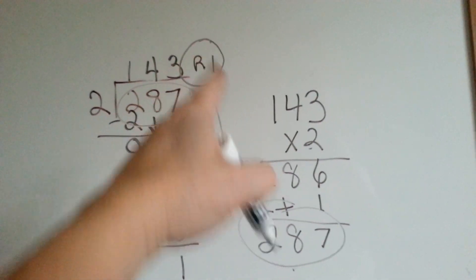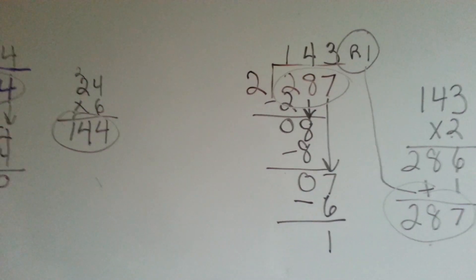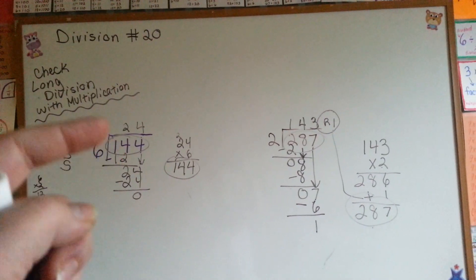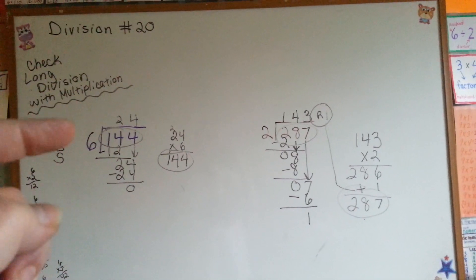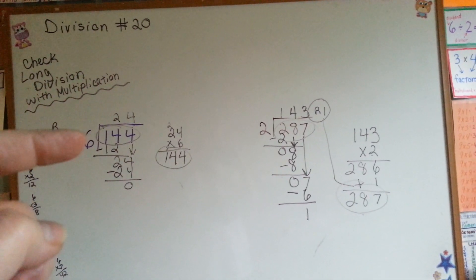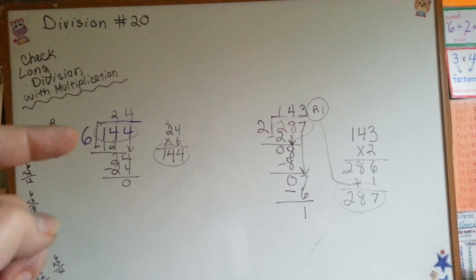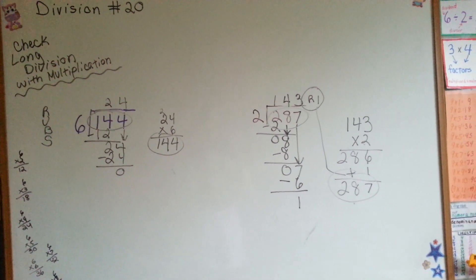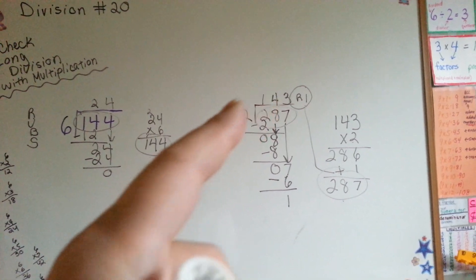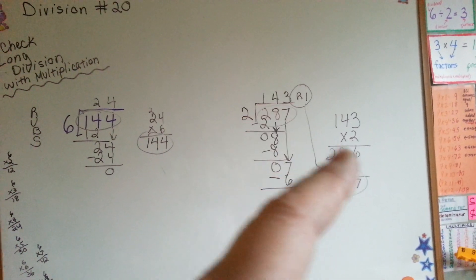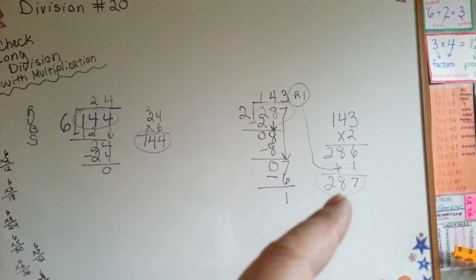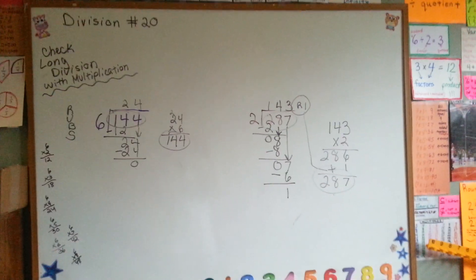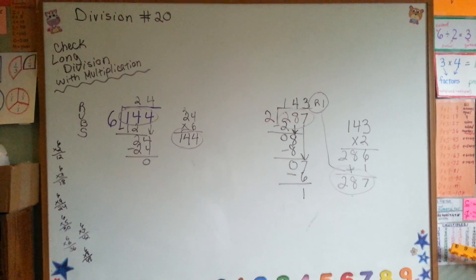That means 143 remainder 1 is correct. So that's how you do long division and check it with multiplication. You do your long division. You write your answer up on top. Then to check it, you multiply the answer by this number. If it comes out to be the same as these, you know you did it correctly. And if you have a remainder, you do the same thing. You multiply these two. And at the end, after you've multiplied them, you add the remainder. And if they're the same, you did your long division correctly. That was pretty easy, wasn't it? No sweat. See you next video.